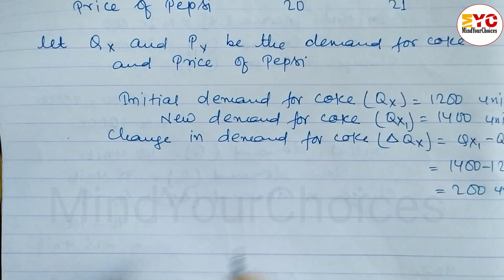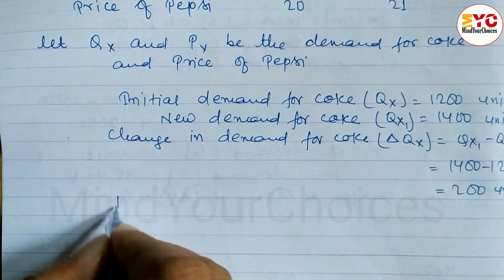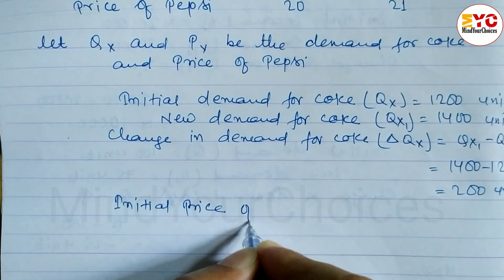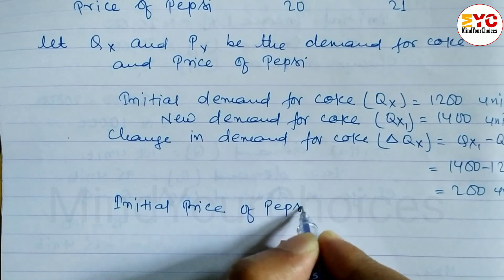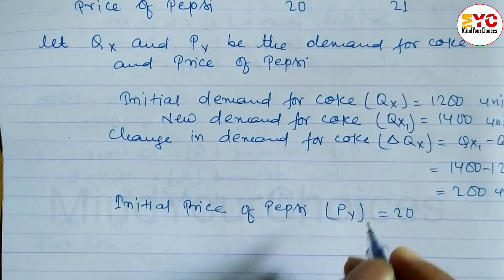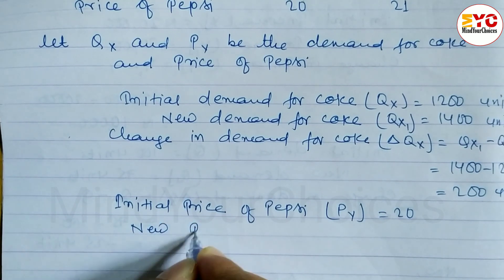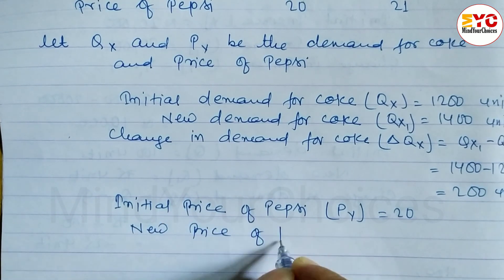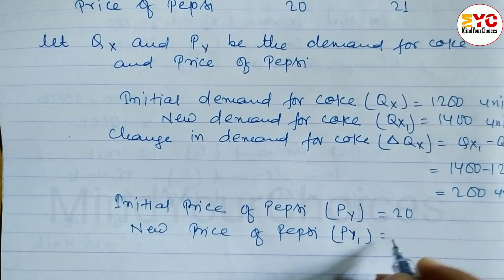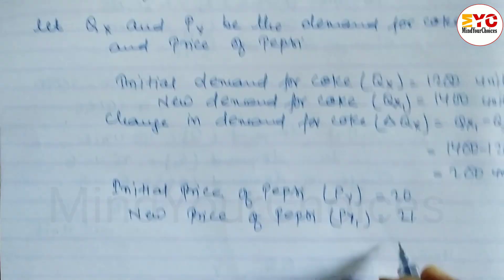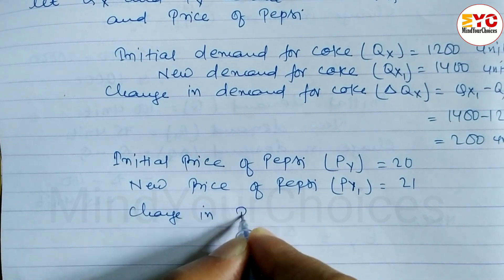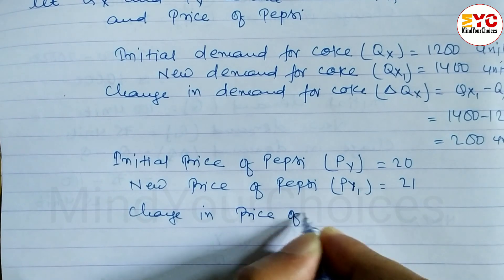Now let's look at the price of Pepsi. The initial price of Pepsi, P Y, is equal to rupees 20. The new price of Pepsi, P Y1, is equal to rupees 21. Now we have to find out the change in price of Pepsi.